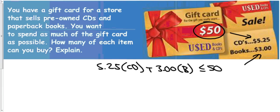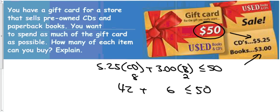There are many different solutions to this equation — not infinite because you can't buy half a CD or a quarter of a book; you have to buy whole items. But there are many possible solutions. For example, if we buy eight CDs, that's $5.25 times 8, which is $42. With $42 spent and a $50 limit, we can only buy two books for $6, with $2 left over. We can plug any number in as long as the total is less than $50.